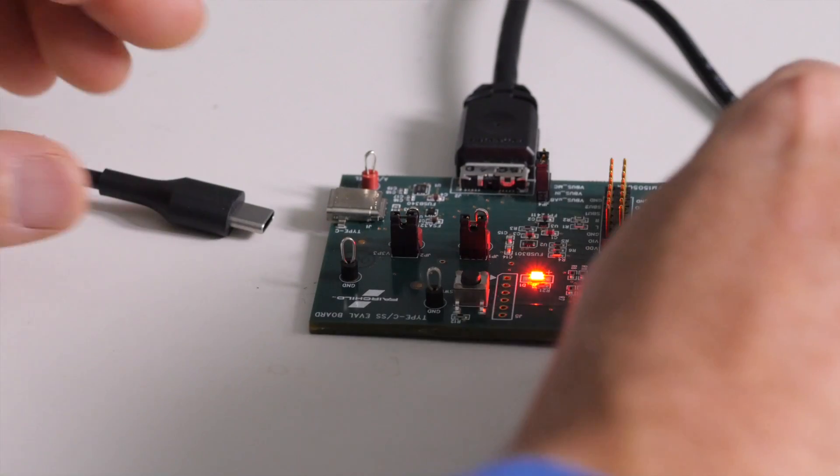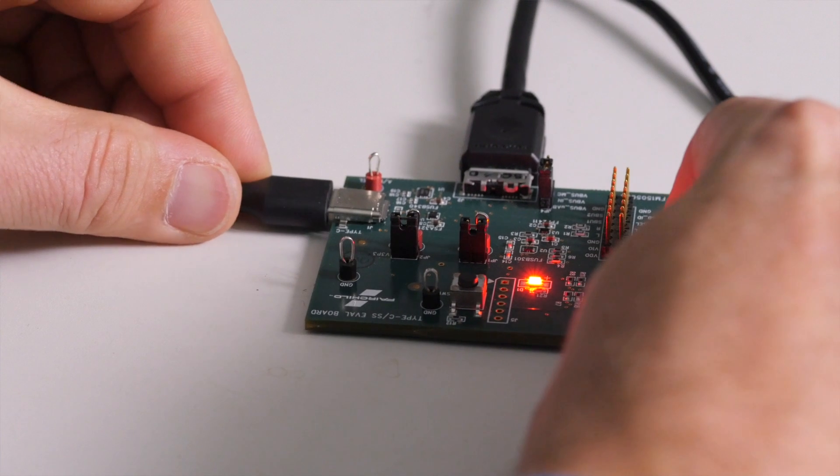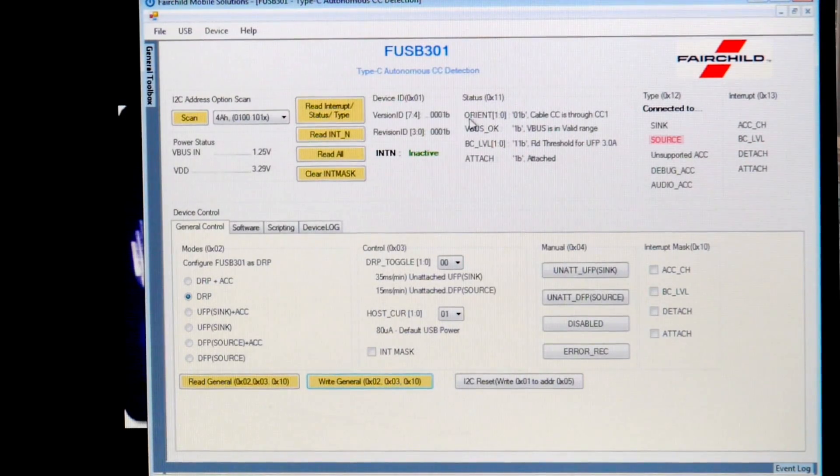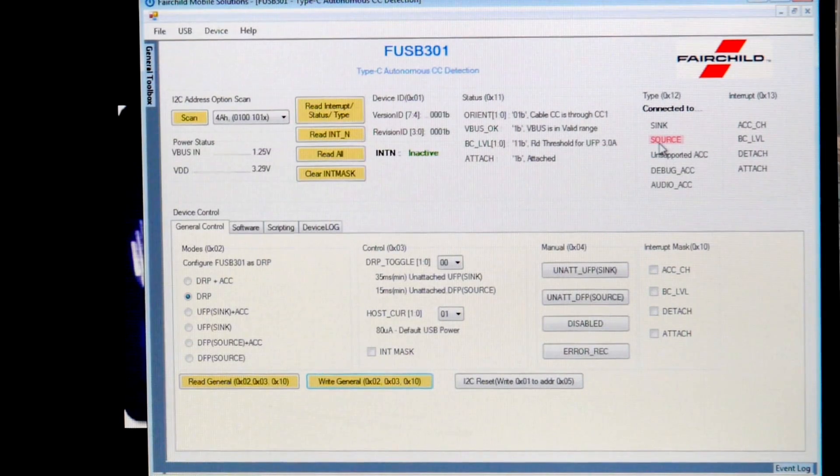I will now connect the Type-C charger to the evaluation board. As you can see here, the FUSB301 has detected the orientation through the CC1 channel. It is also indicating that the charger is capable of sourcing 3 amps of power, and it is connected to a source.